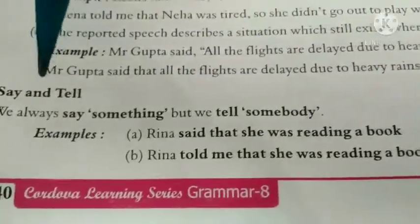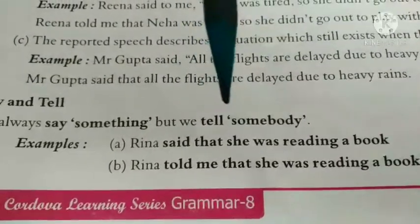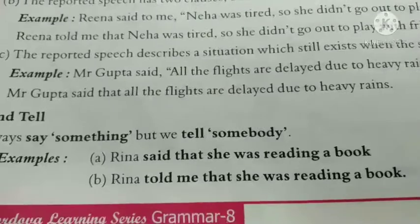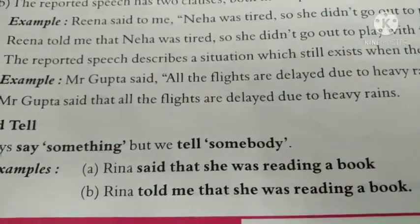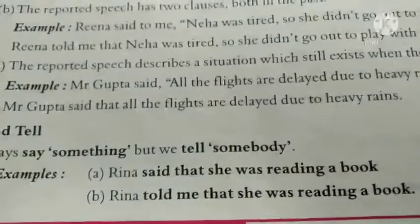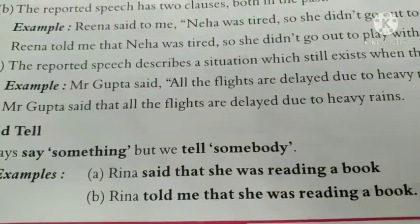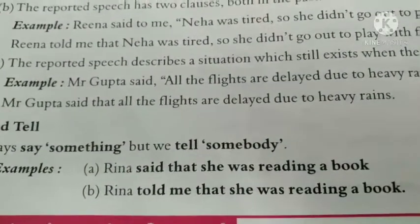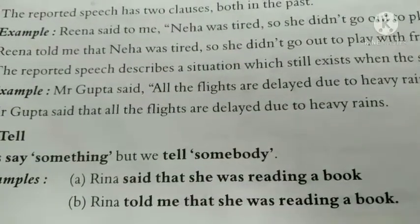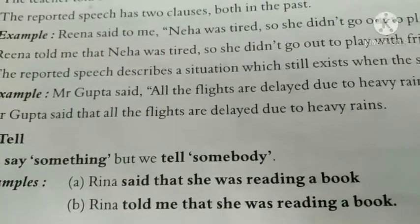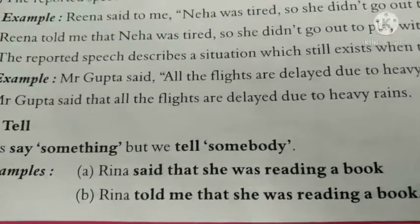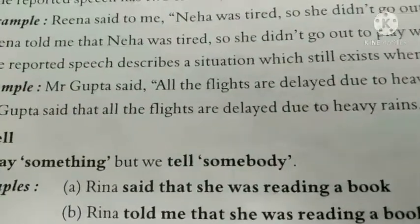Say and tell: we always say something, but we tell somebody. If both a speaker and listener are present, we use 'tell.' If the listener is not specifically mentioned, we use 'say.' So where a listener is given, the reporting verb becomes 'told,' and where only 'said' is written, we keep 'said.'